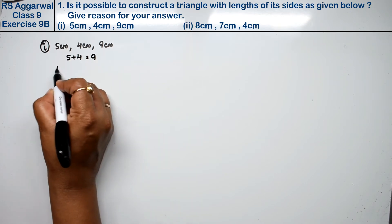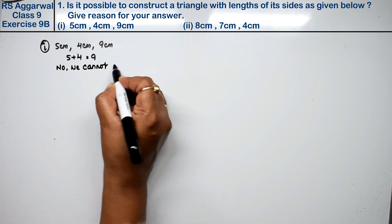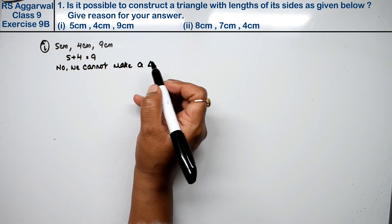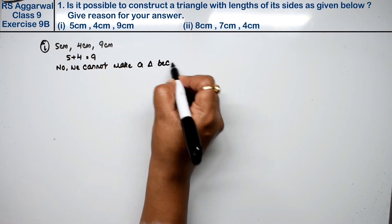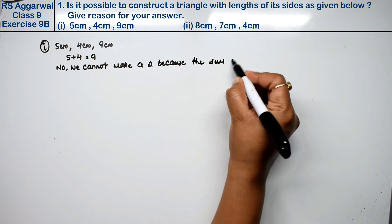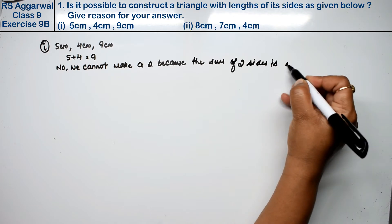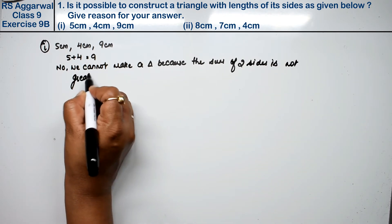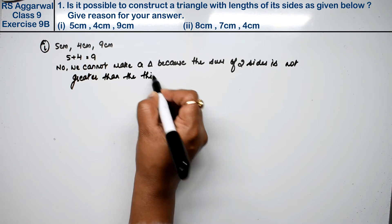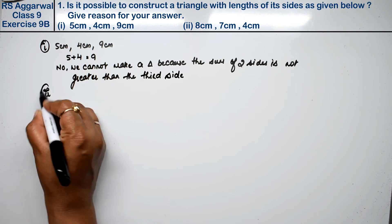So, no — we cannot make a triangle. Why? Because the sum of two sides is not greater than the third side. For a triangle to be possible, the sum of any two sides must be strictly greater than the third side.